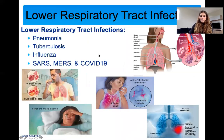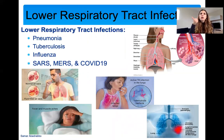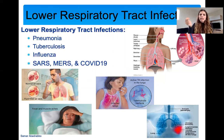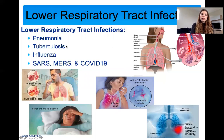We talked about upper respiratory tract infections — common colds caused by rhinoviruses and strep throat caused by Streptococcus pyogenes group A. Now we're going to talk about lower respiratory tract infections: pneumonia, tuberculosis, influenza, and different fatal coronaviruses.